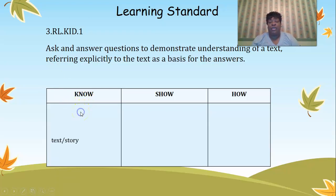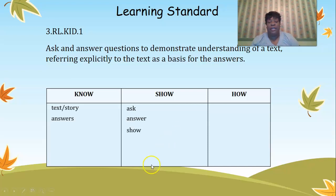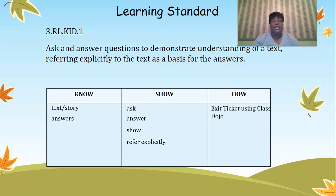What is it that you need to know from this standard in order to show mastery? You need to know what the text is — in this case our text is a story. You also need to know what answers are — answers are the responses that you give to questions being asked. You show me that you understand by asking and answering questions about the text and referring explicitly back to it. At the end, I'm going to ask you to do an exit ticket using Class Dojo.